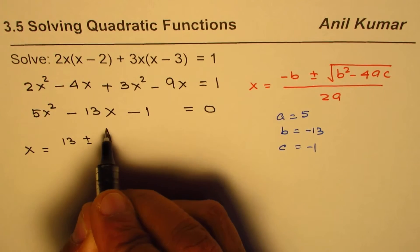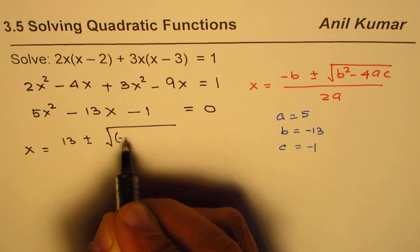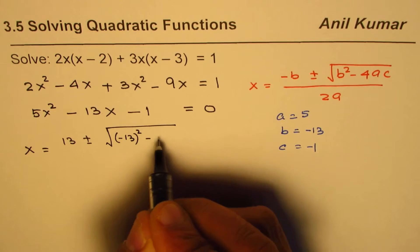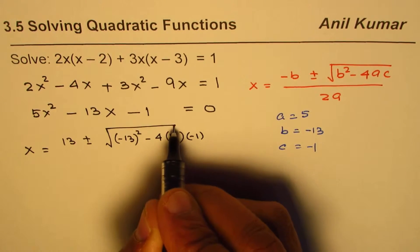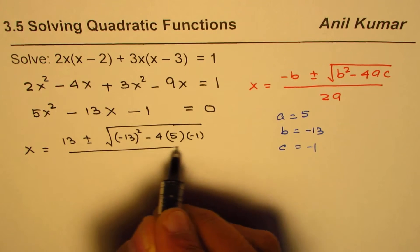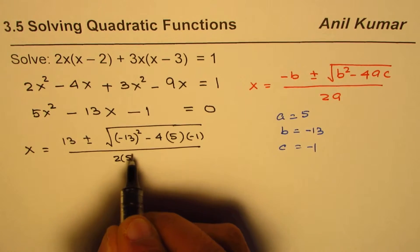Plus or minus square root of b squared, so minus 13 squared, minus 4 times a is 5, c is minus 1. Divided by 2 times a, which is 2 times 5.